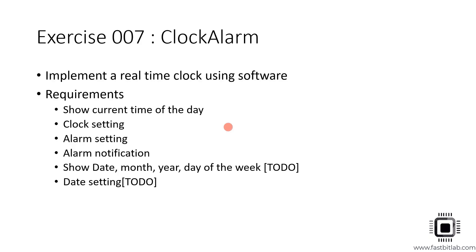Now let's do an exercise on a hierarchical state machine using the QP framework and QP Modeler tool by Quantum Leaps LLC. The exercise number is 007 and the exercise name is Clock Alarm.